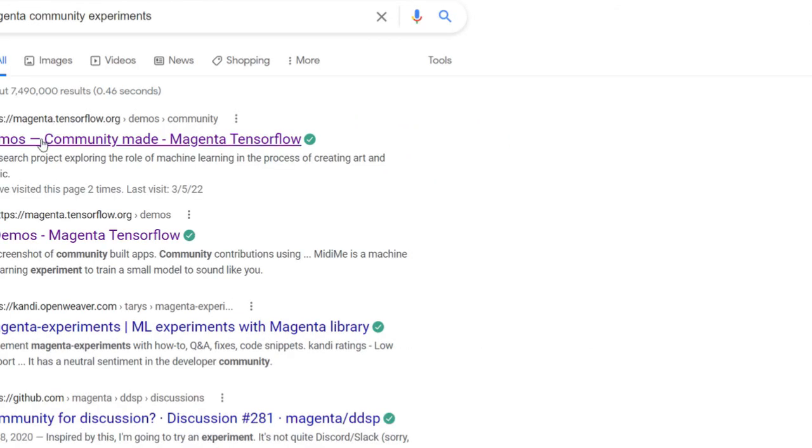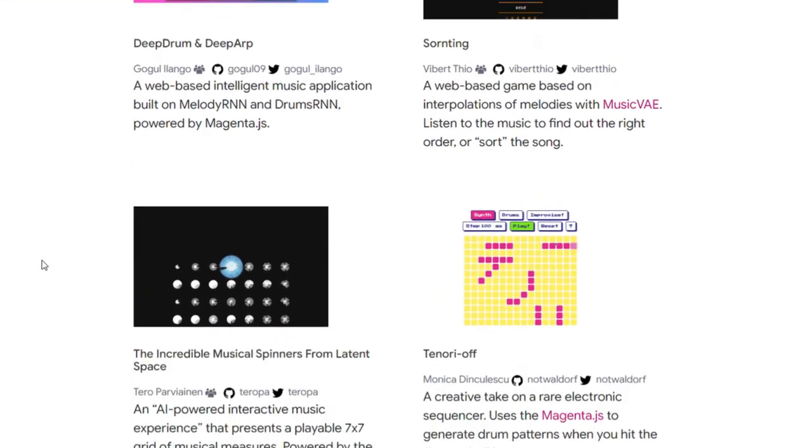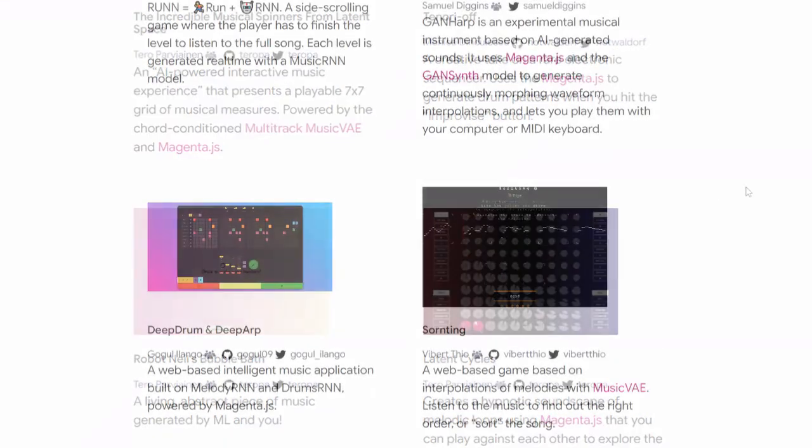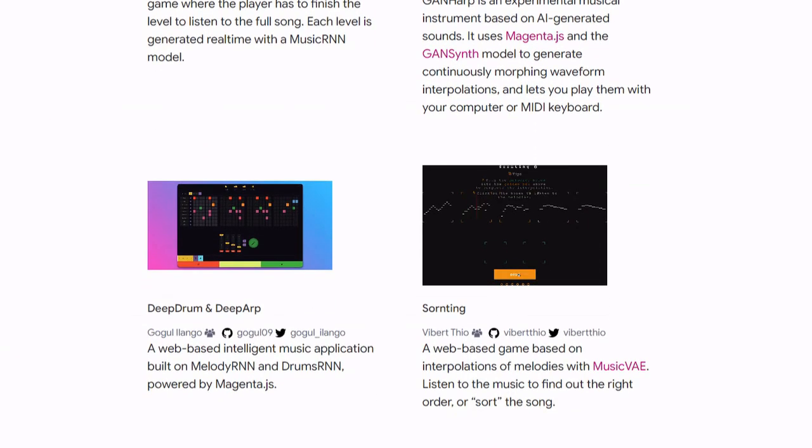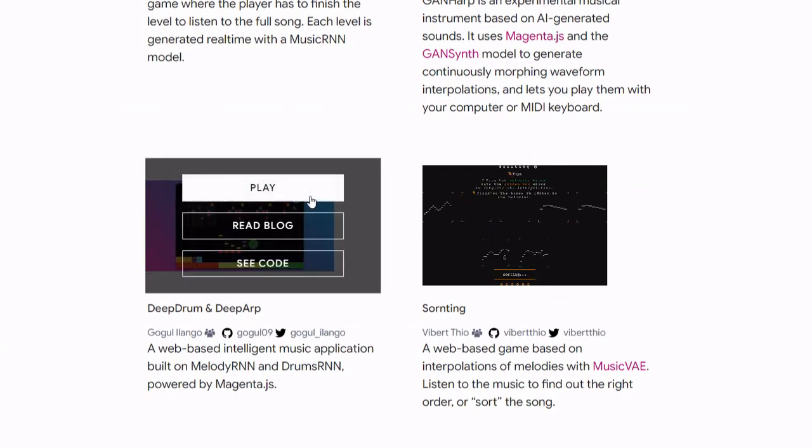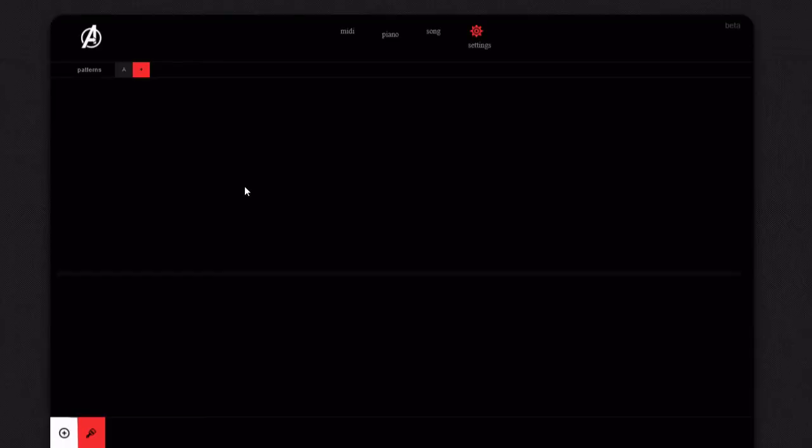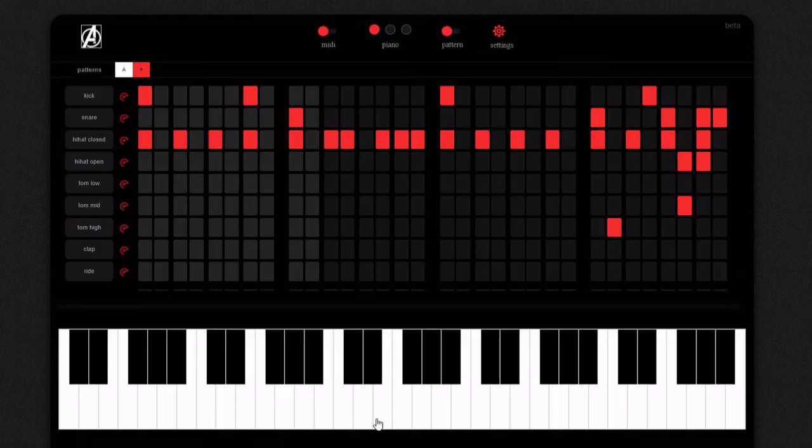Let's first search for Magenta's community demo experiments. We'll first look for Deep Drum and Deep Arp. This allows you to use AI to make a melody and a beat at the same time. If you play around with the settings and the temperature, which is sort of a measure of randomness or originality, you can get some pretty interesting music.